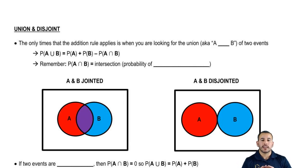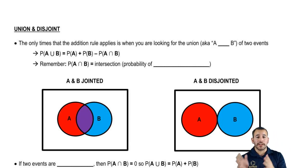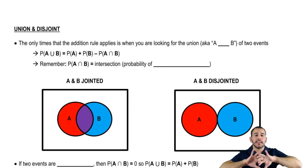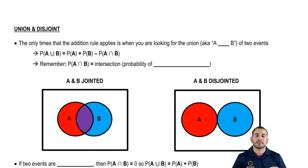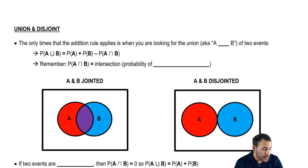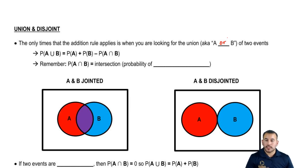We have to know basically the union, which is just one event or another. One important thing to talk about first is whether they're disjoint or not. Remember disjoint — we were talking about mutually exclusive — they can happen at the same time or they can't happen at the same time. So when you're looking for union, there's this addition rule that comes into play. And union, remember, is A or B of these two events.